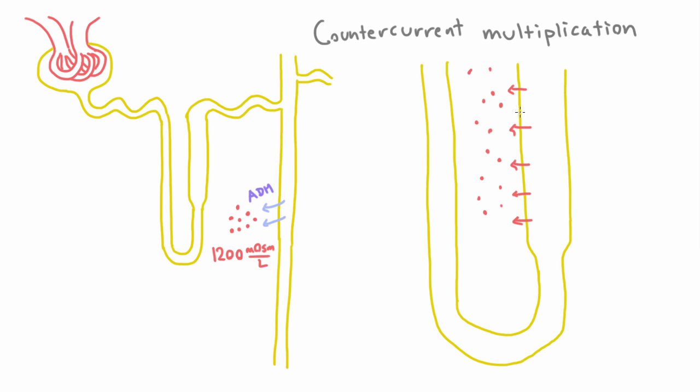Now, the loop of Henle is not permeable to water, so water cannot follow here. Which means that the concentration inside is going to be lower than the concentration here. But the thin descending limb is permeable to water. And so water is going to come out.